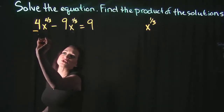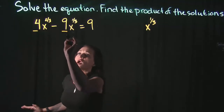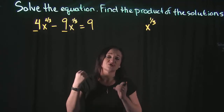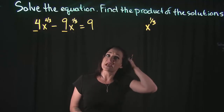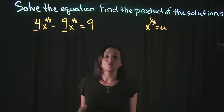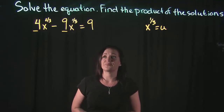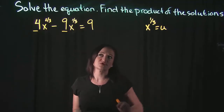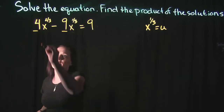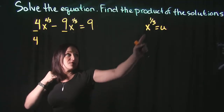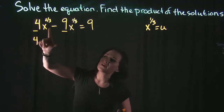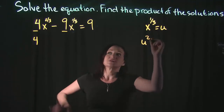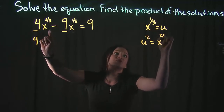I'm not concerned with the coefficients — the 4, the 9 — for right now. I'm concerned with my variables, specifically trying to substitute something in to make it easier. What I'm going to say is that x to the 1/3 is equal to u. This is called a u substitution. I'm going to replace x to the 2/3 and x to the 1/3 with this u. If u equals x to the 1/3, then x to the 2/3 would be the same thing as u squared.